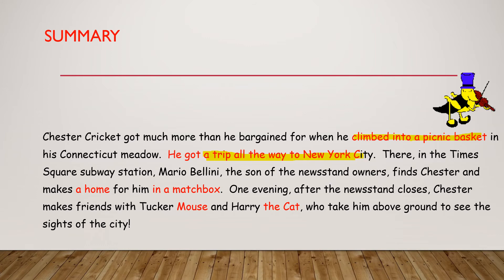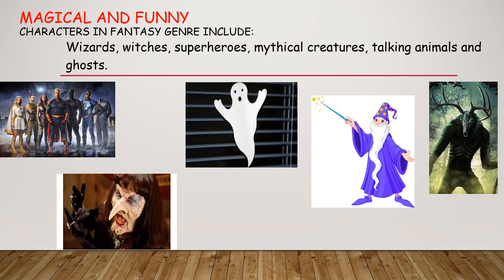Going to the second part: when Mario Bellini finds Chester and makes a home for him in a matchbox — who lives in a matchbox? This too is unreal. Looking at the names Tucker Mouse and Harry the Cat, it's obvious that the characters in the story are animals, and they make friends.